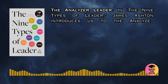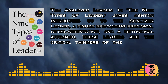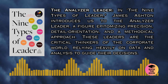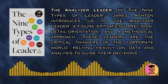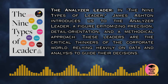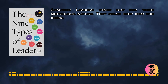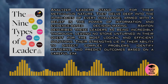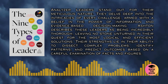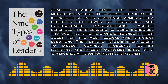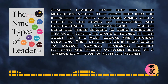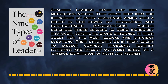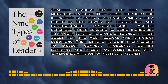In The Nine Types of Leader, James Ashton introduces us to the analyzer leader, a figure epitomizing precision, detail orientation, and a methodical approach. These leaders are the critical thinkers of the corporate world, relying heavily on data and analysis to guide their decisions. Analyzer leaders stand out for their meticulous nature — they delve deep into the intricacies of every challenge, armed with a belief in the power of information and evidence-based decision-making. Ashton describes these leaders as incredibly thorough, leaving no stone unturned in their quest for logical and efficient solutions, with strengths in dissecting complex problems, identifying patterns, and predicting outcomes.